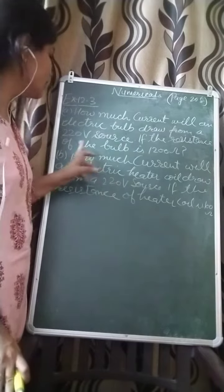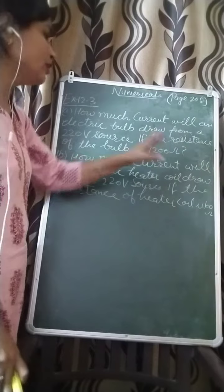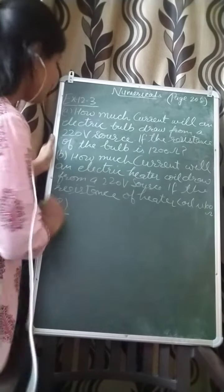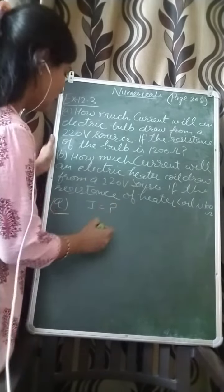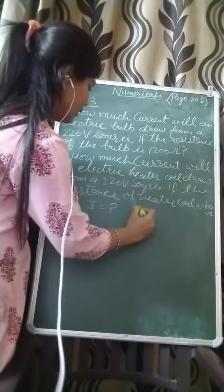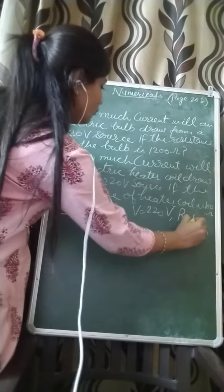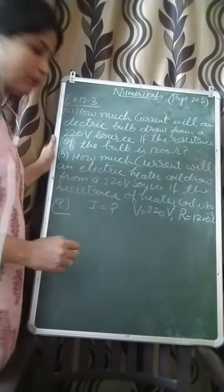If the resistance of the bulb is 1200 ohm, first of all, we will note down part A. You have to find out the current. V is 220 volt and R is 1200 ohm in part A.